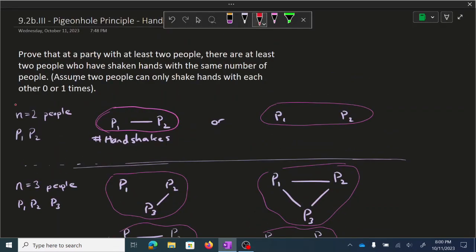So first off here, I've drawn it when n equals two people. We have P1, P2, and there are really only two cases in a party with two people. Either they shake hands or they don't. And I want to start counting this shaken hands. So if P1 shakes P2 hands, then they each have shaken one hand.